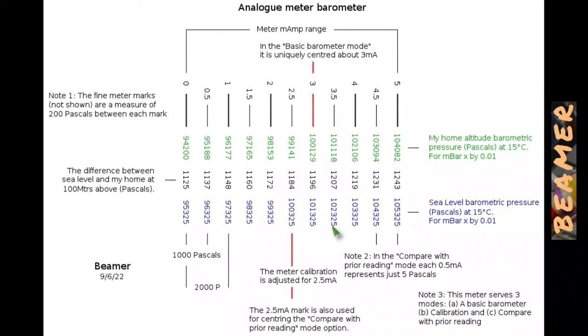Having said all that, let's go through the note. At the top here, let's start off at the top and go anti-clockwise. At the top here, in the basic barometer mode, it is uniquely centered around 3 milliamps. Well, that's in the direct mode and it's centered at 3 milliamps. On note one, it's saying the fine meter marks not shown are a measure of 200 pascals between each mark. That's in the direct mode and there are 200 pascals per half a milliamp divided by 5. The next note here, the difference between sea level and my home at 100 meters above pascals. Well, we've described that. That's the numbers through the middle here in black and they change as the pressure goes up. Pressure goes down according to a non-linear logarithmic scale.